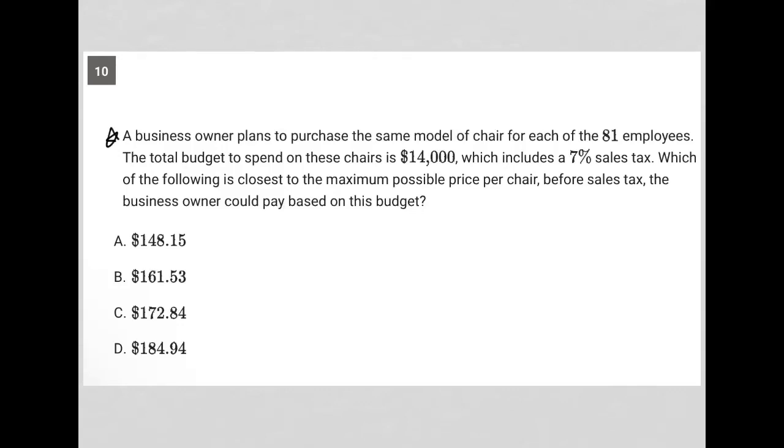This question says a business owner plans to purchase the same model of chair for each of the 81 employees. This is looking like a translate word problem, which just means I want to stop at the end of each sentence to make sure I understood what I read before moving on and making sure I definitely write down any quantitative information. So far from this first sentence, I know that there are 81 employees, so I'm going to just write that down.